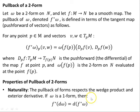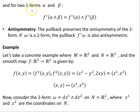Before the example, let's look at a couple of properties. The first is naturality: the pullback of forms respects the wedge product and the exterior derivative. If omega is a one-form, then F*(dω) = d(F*ω) — the pullback of the exterior derivative of omega equals the exterior derivative of the pullback of omega. For two one-forms alpha and beta, the pullback of alpha∧beta equals F*alpha ∧ F*beta. That will be truly useful for us.